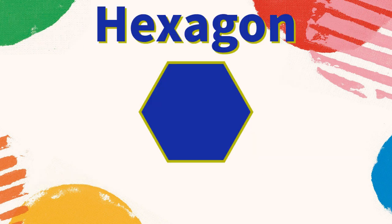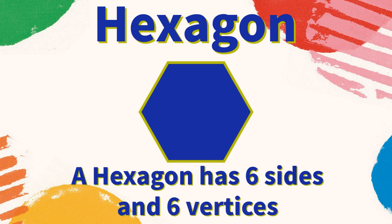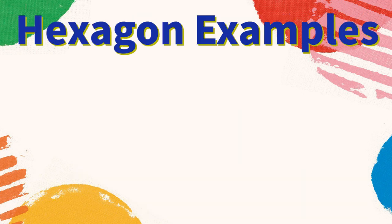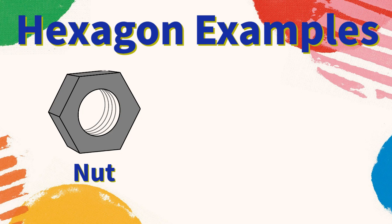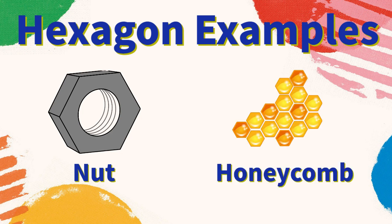Hexagon: a hexagon has six sides and six vertices. What are some examples of hexagons? A nut is a hexagon, the honeycombs that bees make are hexagons. What are other examples you can think of?